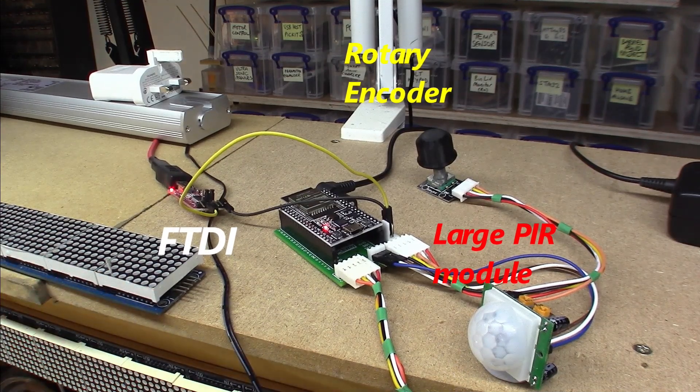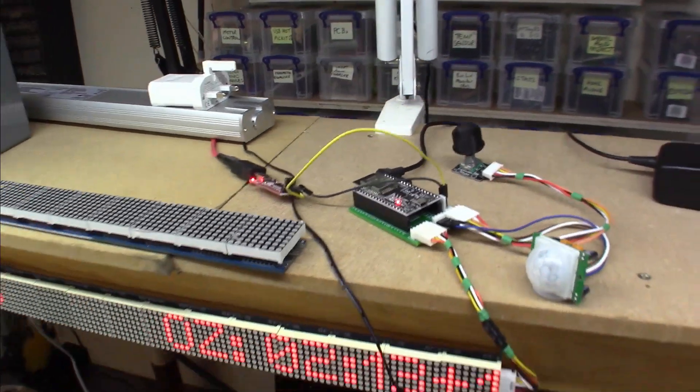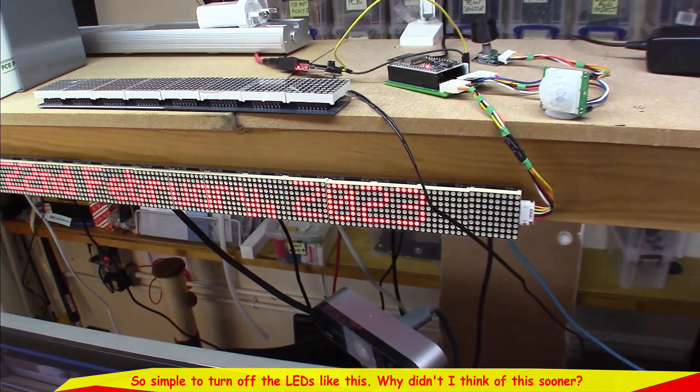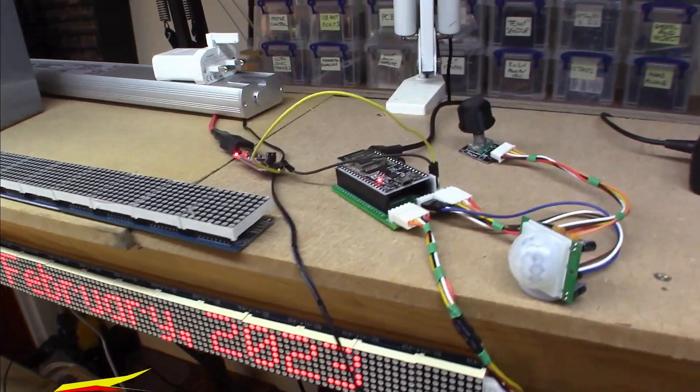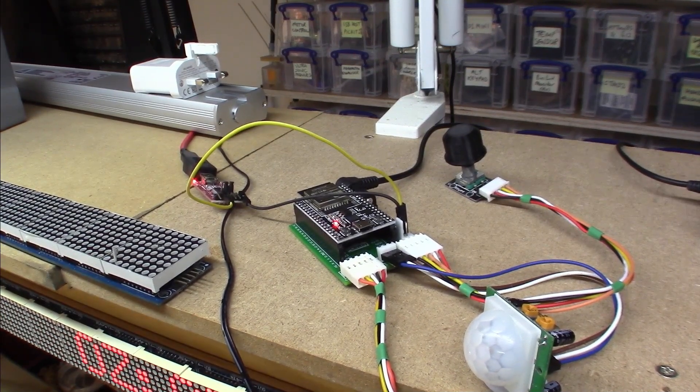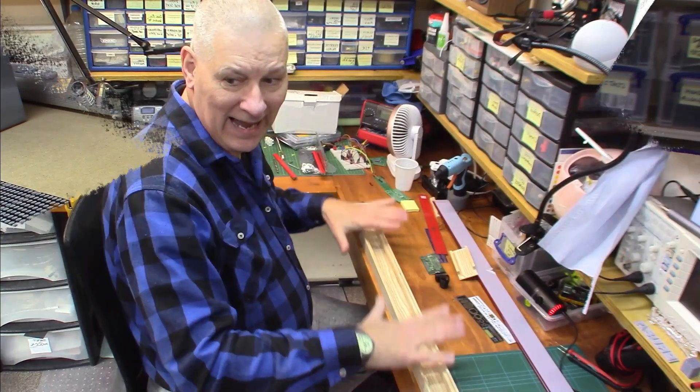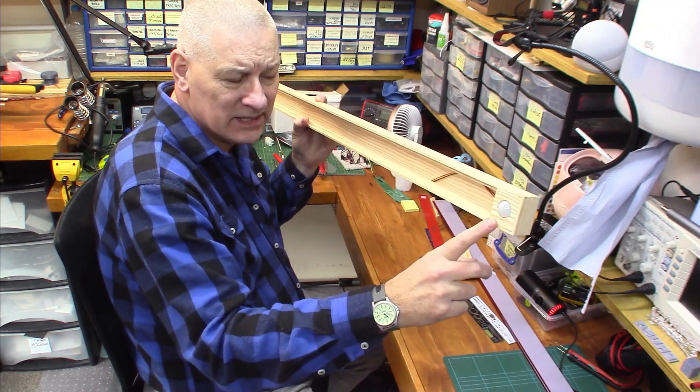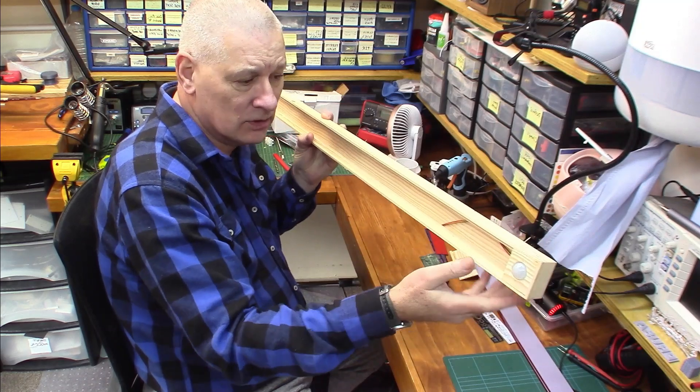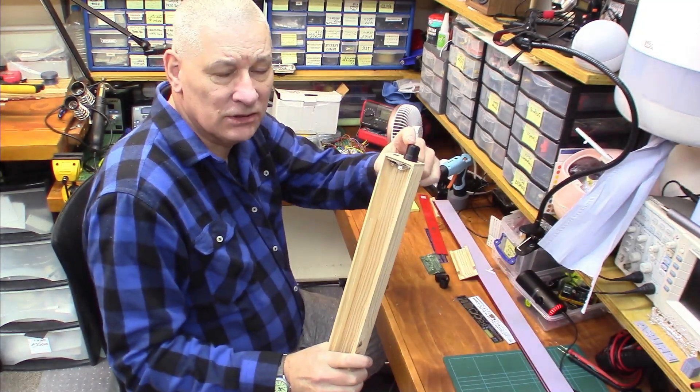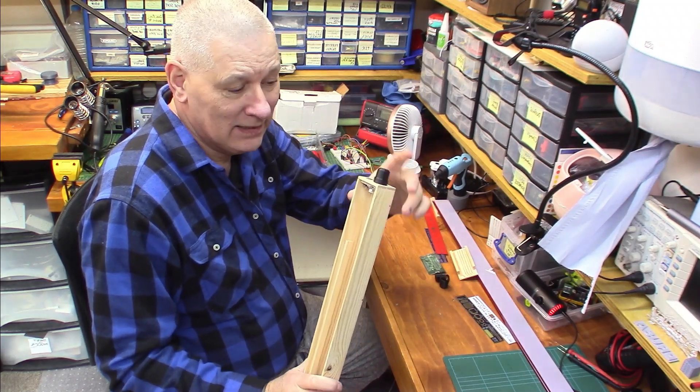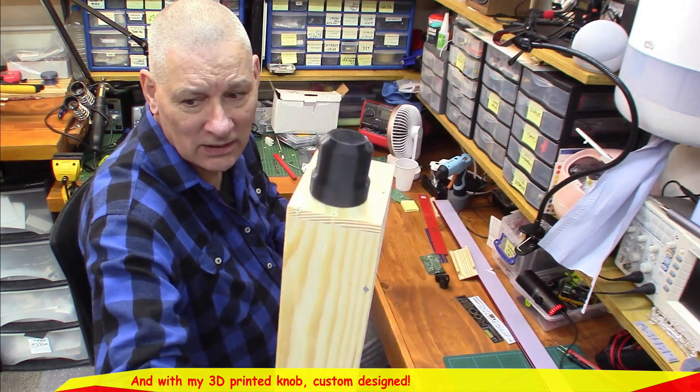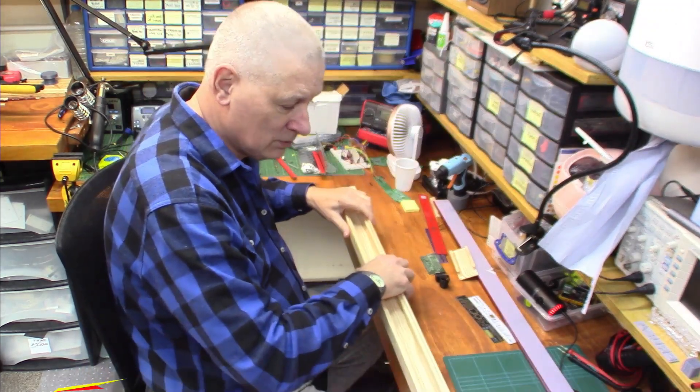This display switches off to save power. If not, after five minutes it switches the display off. That's all got to fit somehow into the case that I've made for it. This is the case for the long strip, 0.9 meters it is. There's the PIR at the top, here's the rotary encoder for the brightness. That knob, 3D printed.